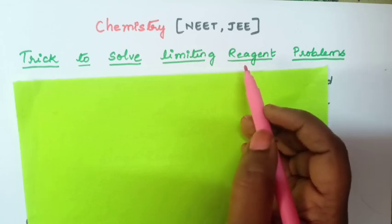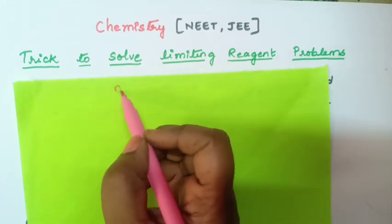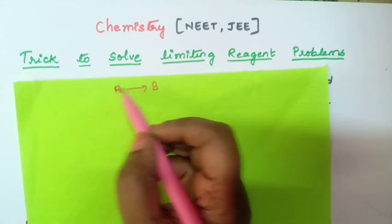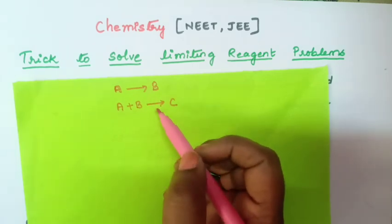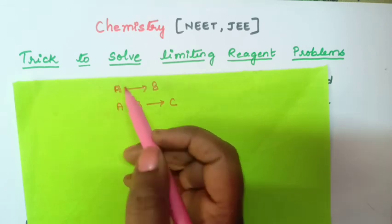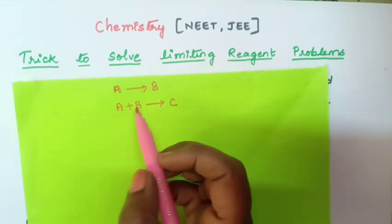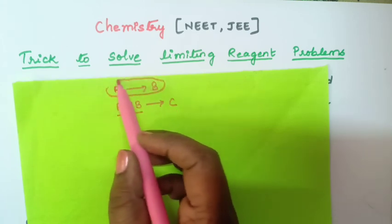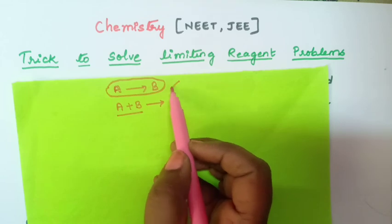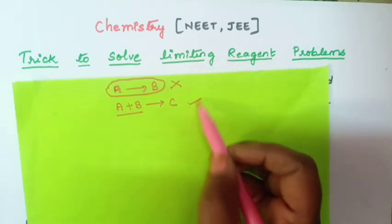First let us understand what is the meaning of limiting reagent. In a reaction, reactants will be there — there can be one reactant or many reactants. For example, A giving B has one reactant, and A plus B giving C has two reactants. Limiting reagent will be present only in a reaction where there are two or more reactants. In a single-reactant reaction, there is no limiting reagent.